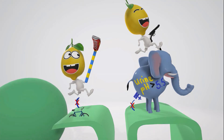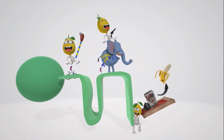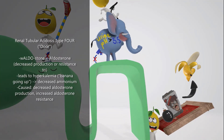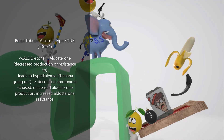Now let's move on to RTA type 4 — we skip type 3 because it's basically a combination of types 1 and 2, is very rare, and is not high yield. RTA type 4 is represented by the lemon with the door — the door represents 4. There's a bomb next to the 'aldostone' — Waldo on a stone representing aldosterone — which is exploding. This helps us remember that the defect in RTA type 4 is aldosterone resistance or a decrease in aldosterone.